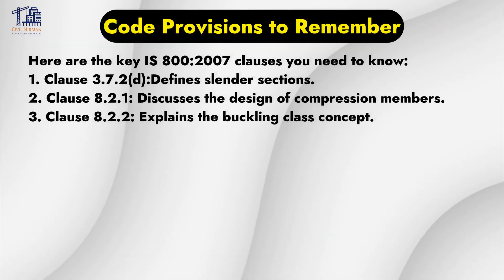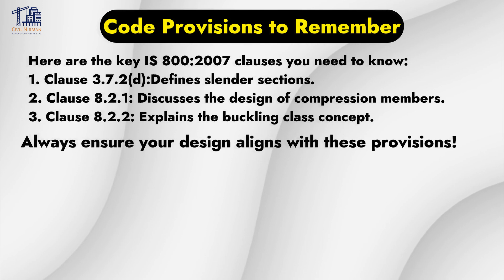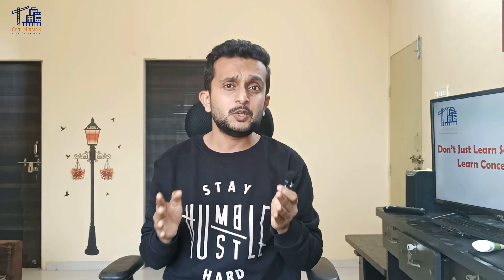Clause 3.7.2 defines slender sections; clause 8.2.1 discusses the design of compression members; and clause 8.2.2 explains the buckling class concept. Always ensure your design aligns with these provisions.